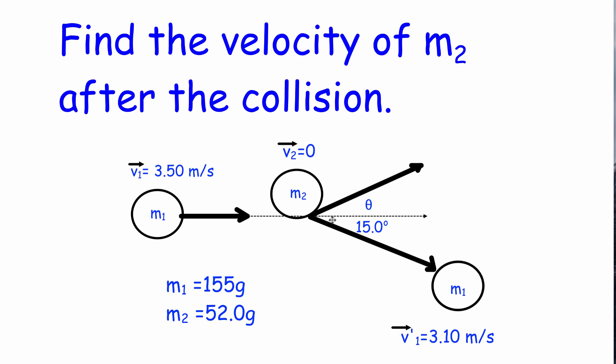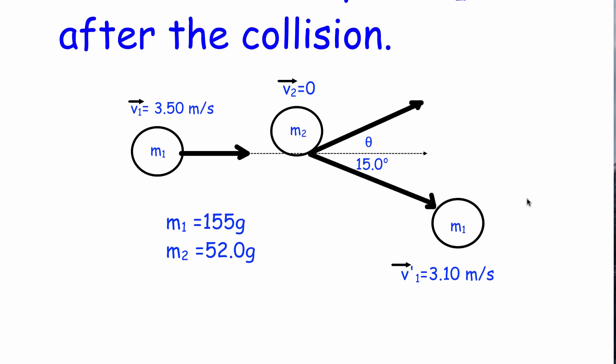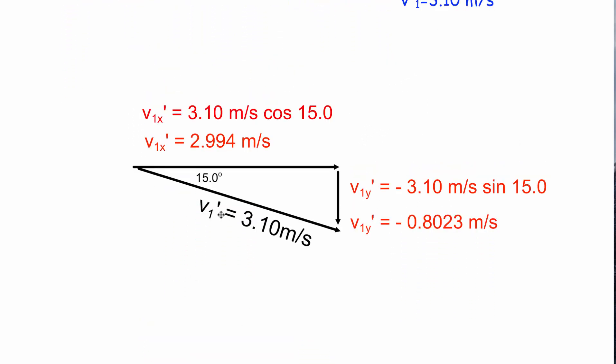What I want to do is take a look at what's happening to ball one after the interaction and I'm going to find the components which will be the x component and the y component of its velocity. The hypotenuse is 3.1 meters per second. We have an angle of 15, so the x component is 3.1 cos of 15, which is 2.994 meters per second. The y component pointing down will be negative, so it's 3.1 times the sine of 15 which gives us negative 0.8023 meters per second.